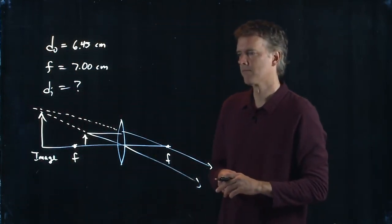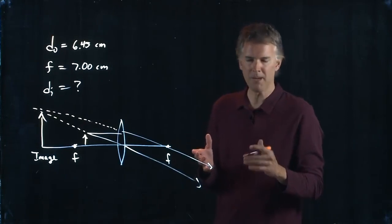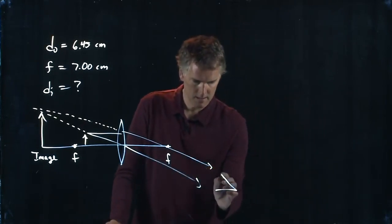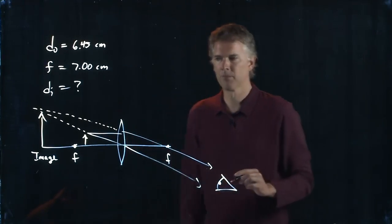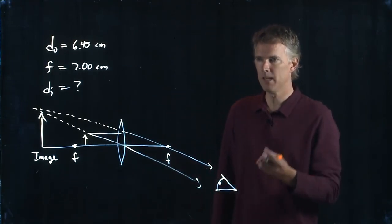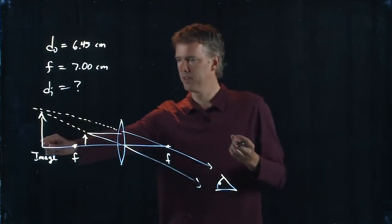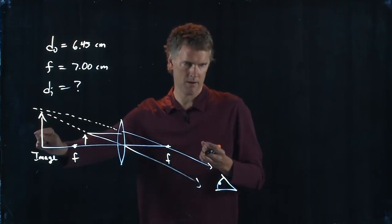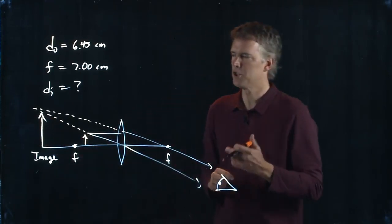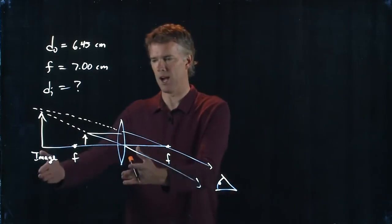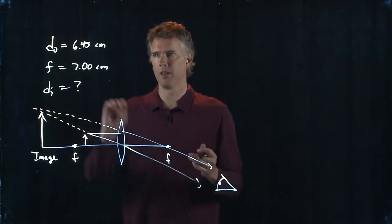Okay, what does this mean? It means if I stood here and looked at this thing, where would I perceive the image to be? I would perceive it to be right there. Now let's make sure that this jives with the thin lens equation.